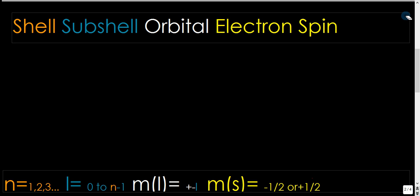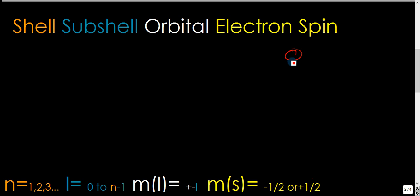So imagine a guy named Tom, right? Tom's an electron. And Tom lives in a house, which would be this orbital. And that house is in a city, and that city is in a state.